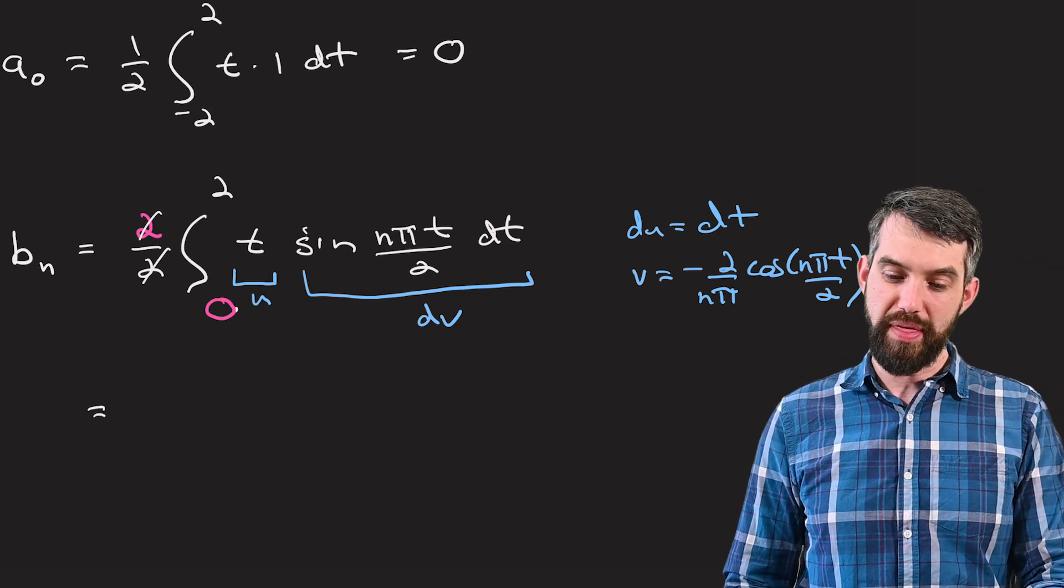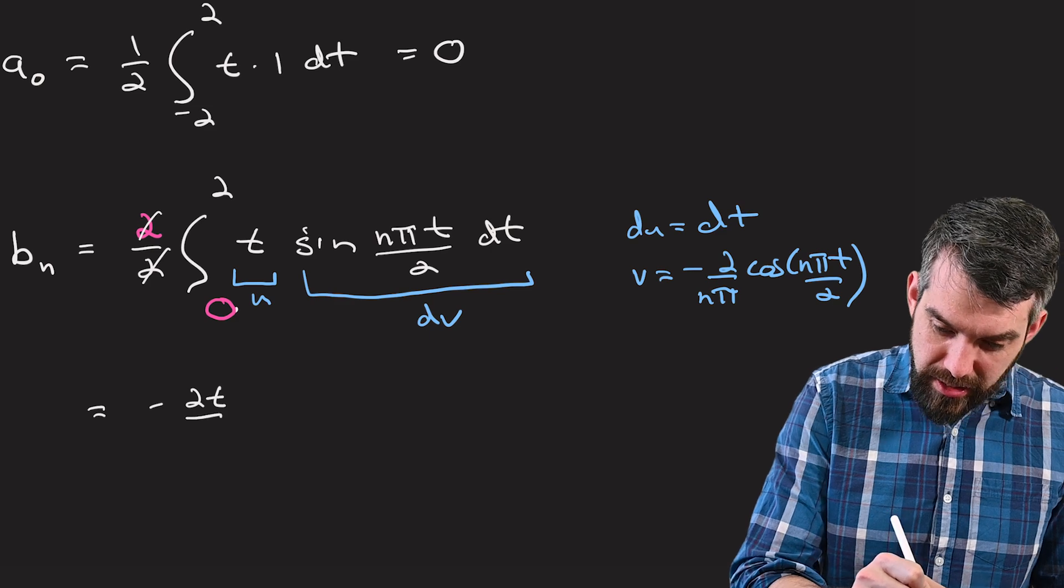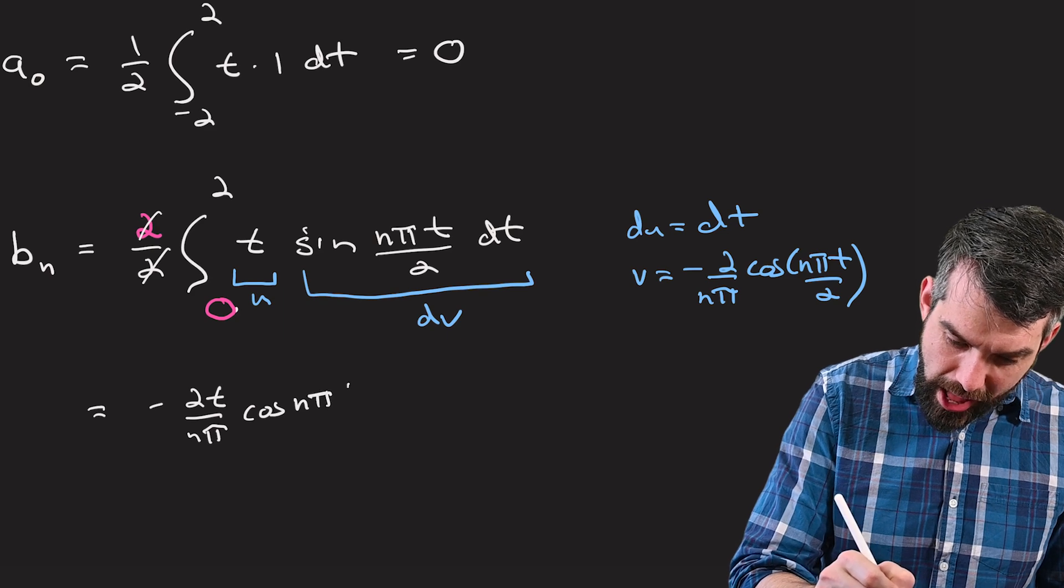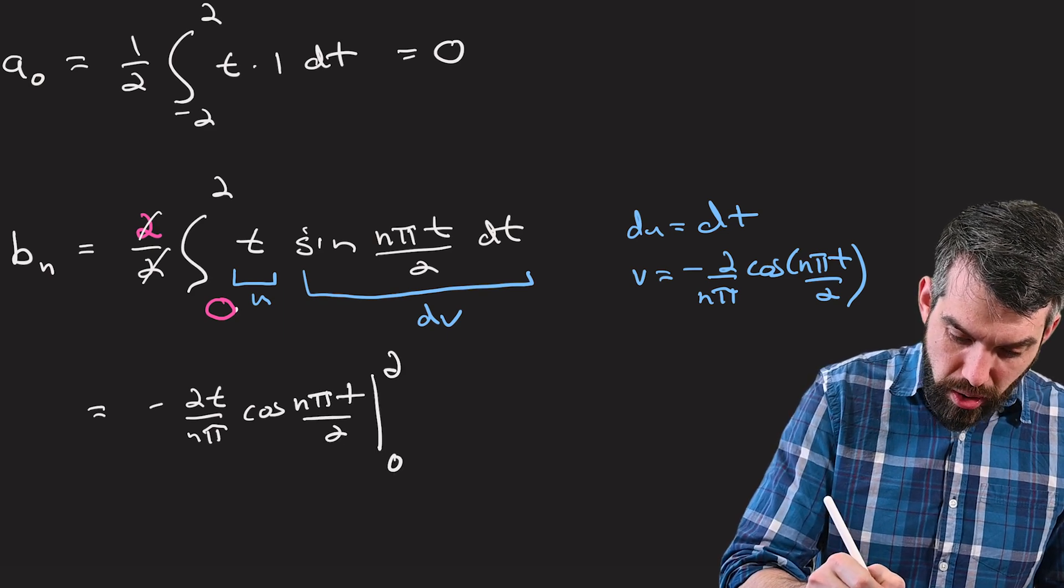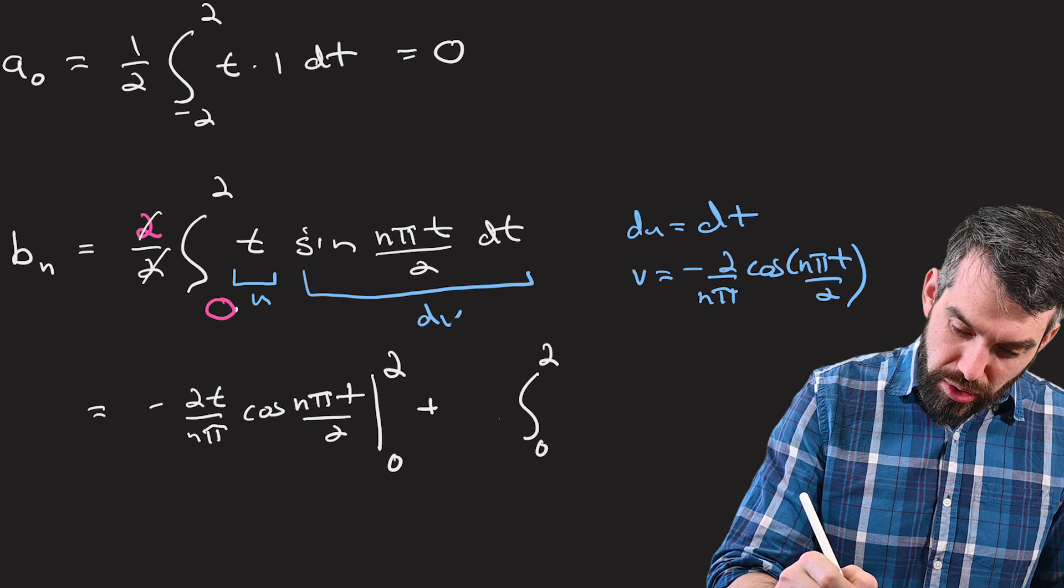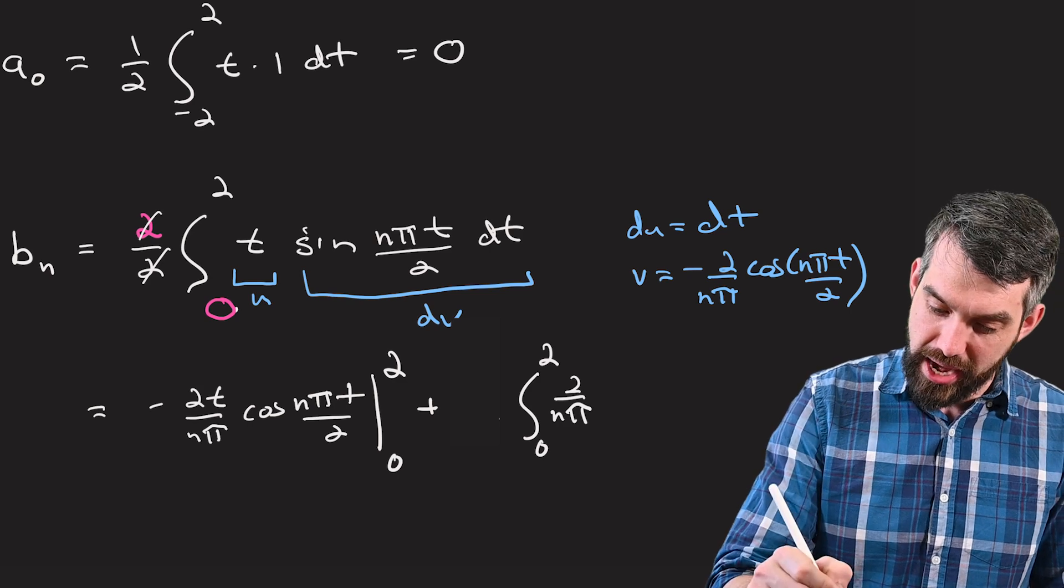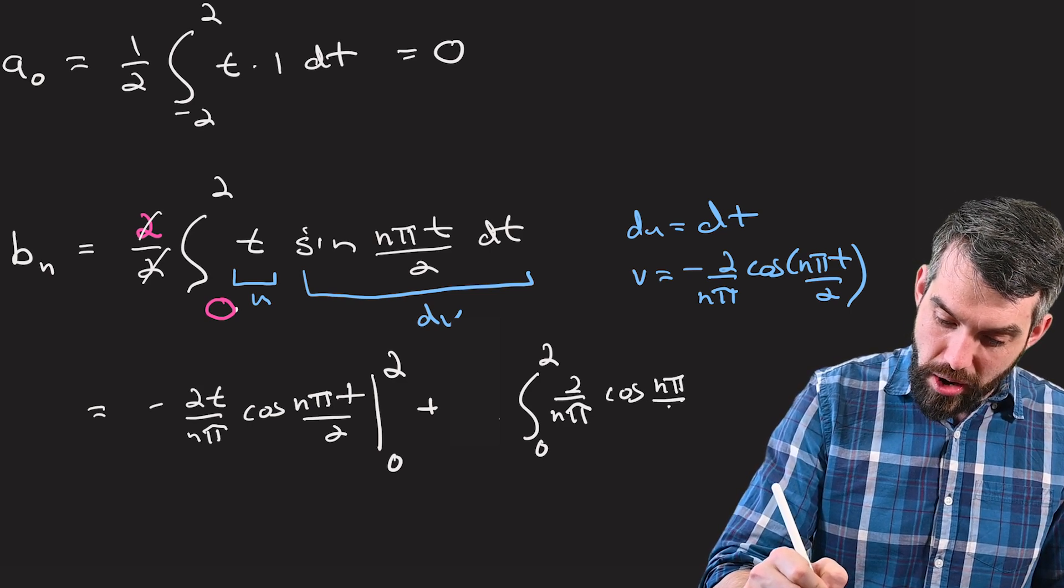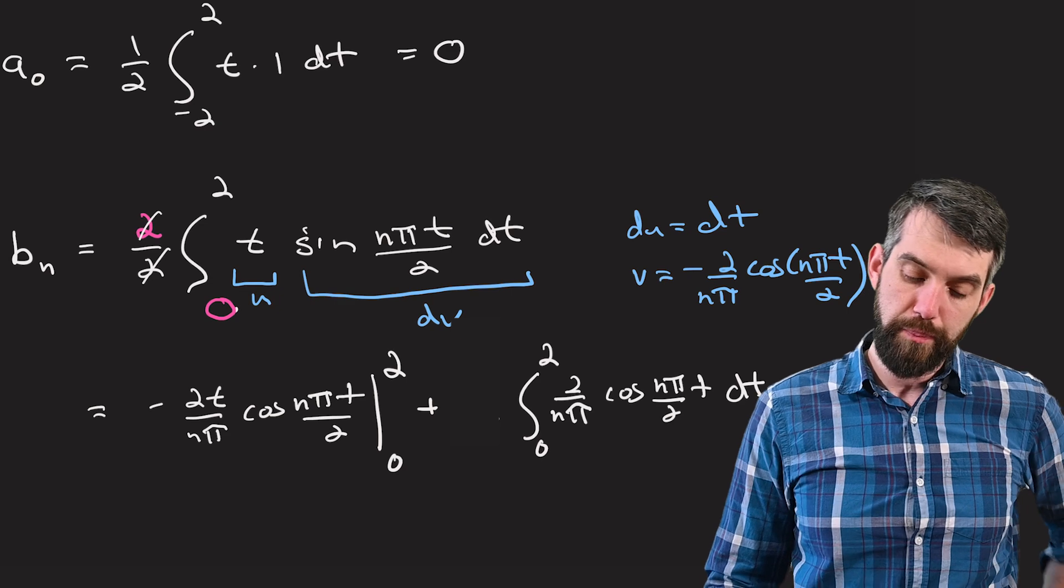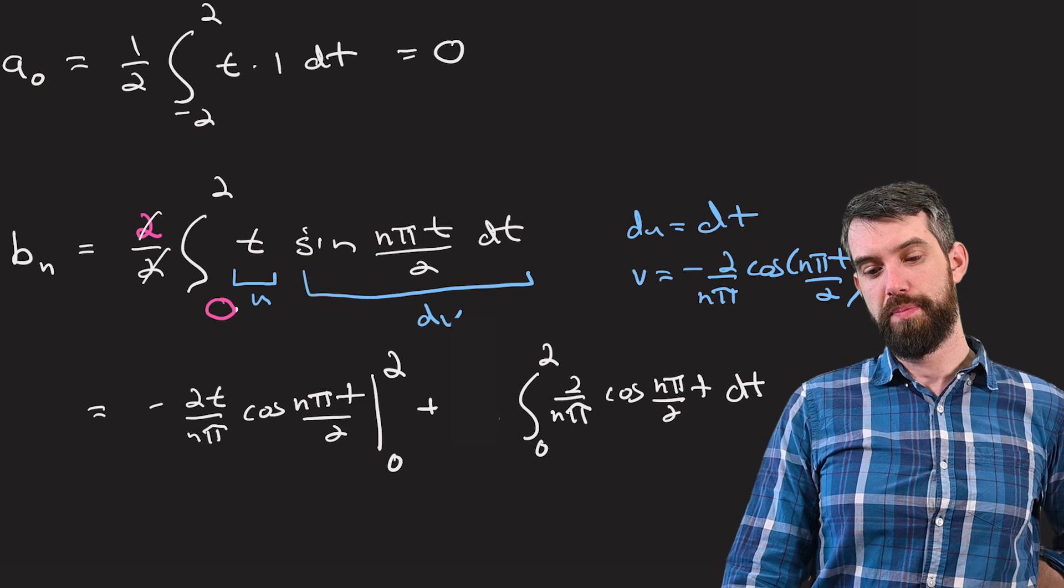So I now just need to plug all of this in. The twos cancel at the front, so I don't have to worry about any of that. I'll do my u times v, so this is going to be minus 2t divided by n pi times cosine of n pi t divided by 2 and evaluated between 0 and 2. I then subtract a negative, so that's going to be a plus, the integral from 0 up to 2 of 2 divided by n pi. Again, I've already dealt with the minus sign, cosine n pi over 2 times t integrated dt.